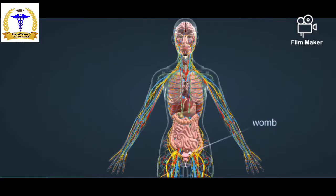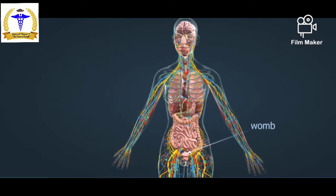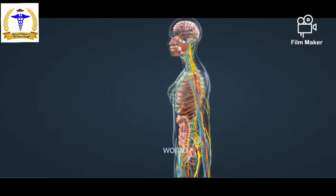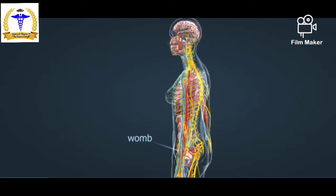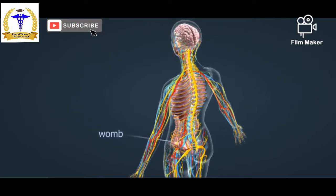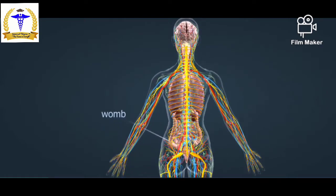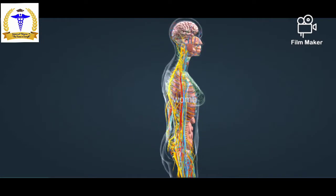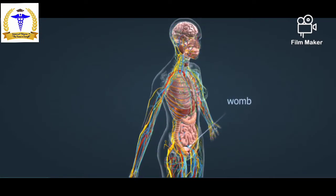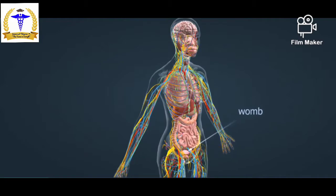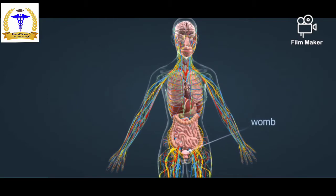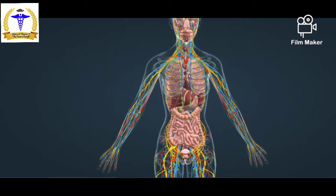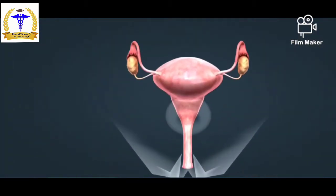Hello friends, welcome to my channel Universal Telegram One. Today we are going to learn about the female reproductive system. First we will see the position of the reproductive organs as a worm view, then we will discuss the internal reproductive organs and the external reproductive organs.